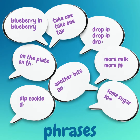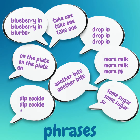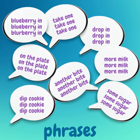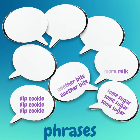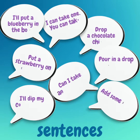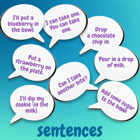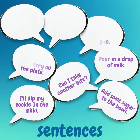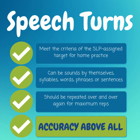Once you're at word level and beyond, it is easy to think of some little phrases — you just repeat the whole phrase instead of a word. Or have your child use a full sentence if you're at that level. Always remember, speech turns must meet the criteria of the SLP-assigned target for home practice.